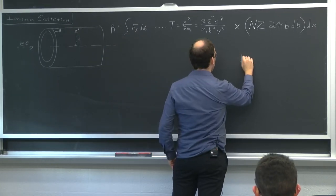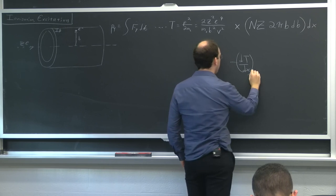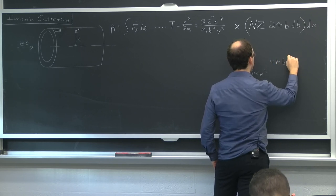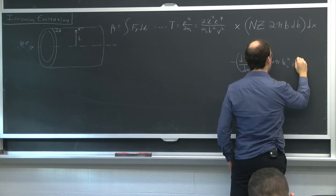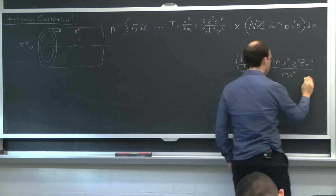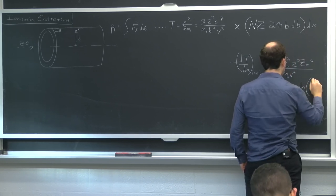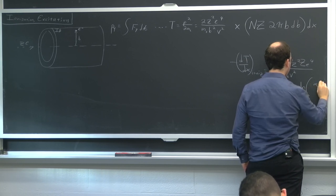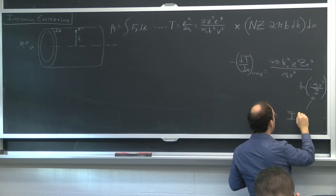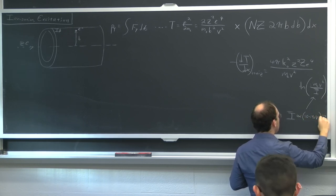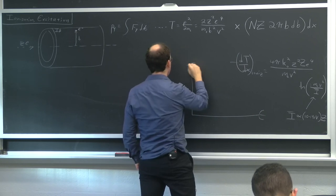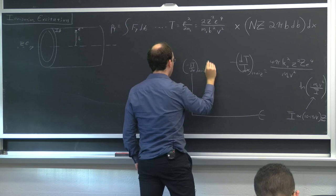We did something. And one of the intermediate steps we came up with was that our energy imparted to the electron is p squared over 2 times mass of the electron, which came out to 2z squared, e to the fourth, over mass of the electron, impact parameter squared, velocity squared.